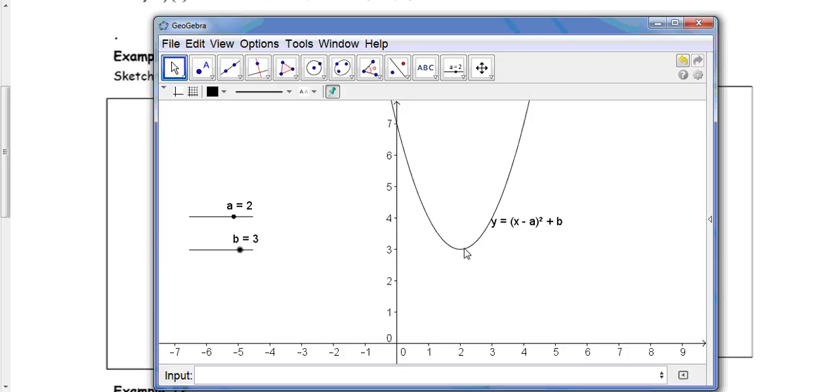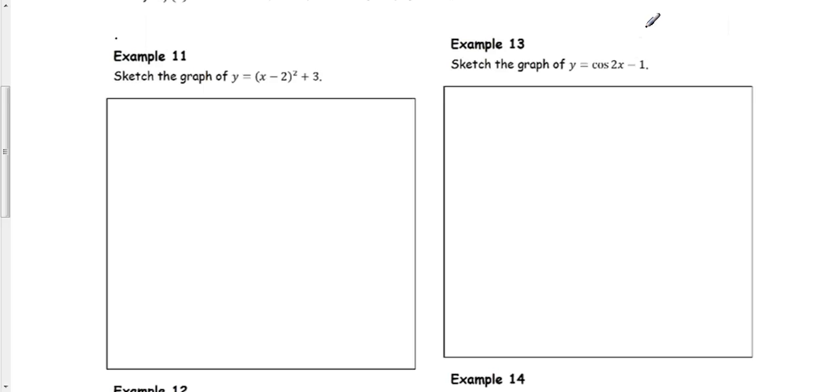And as you should expect from what you know in C1, with this being completed square format, we'd expect the minimum part of the graph to be at 2, 3. Just by looking at this, we should be expecting a minimum at 2, 3. And the graph confirms that is exactly what happens.